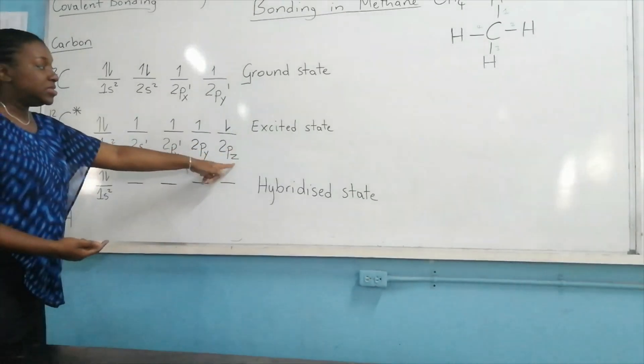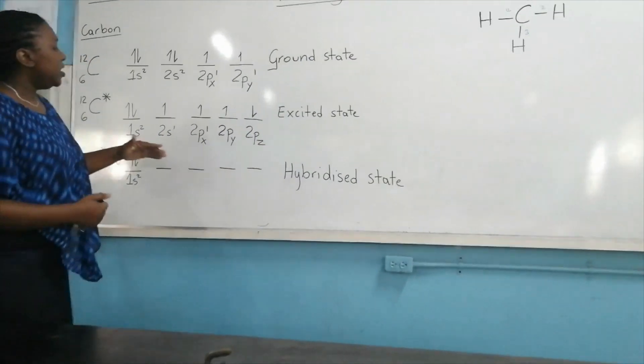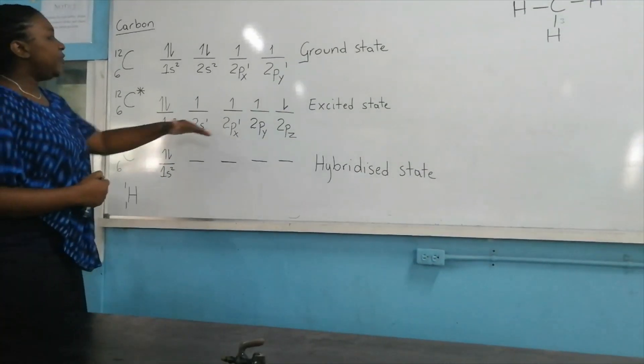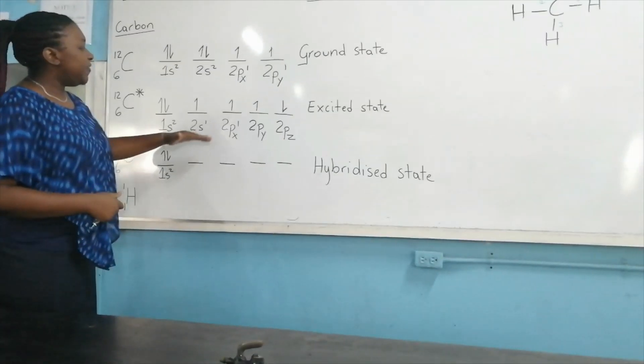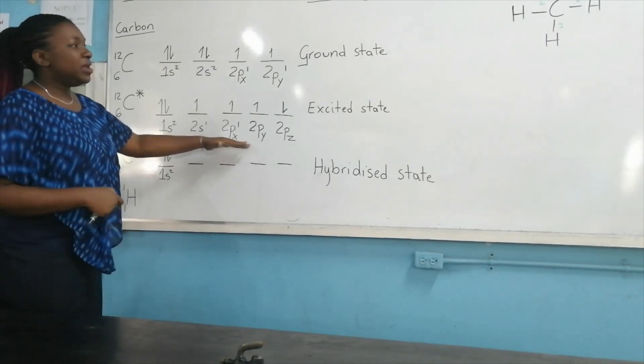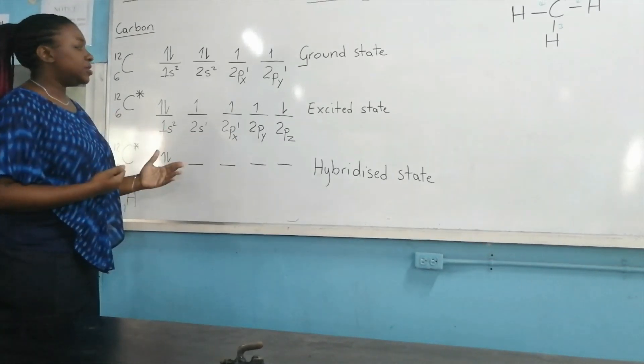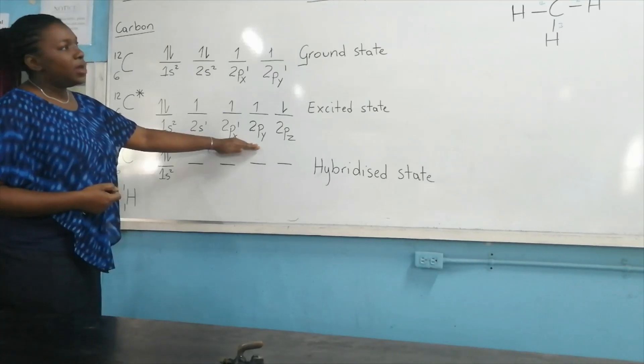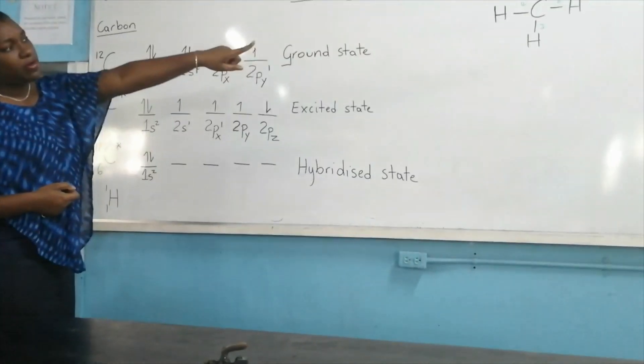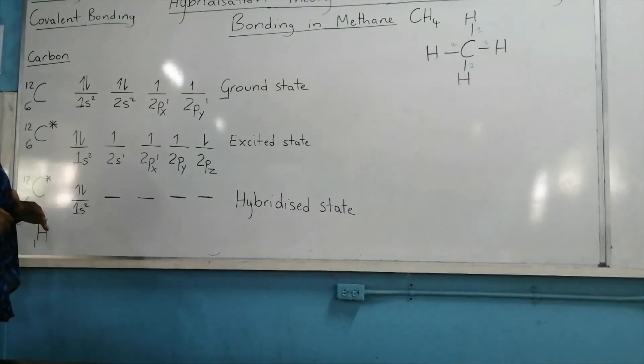We now have carbon with 4 unpaired electrons. So we have 4 unpaired electrons, but they're in 2 different types of orbitals. They're in the s orbital and the p orbital. I've drawn a diagram over there now indicating the s orbital and the p orbital.